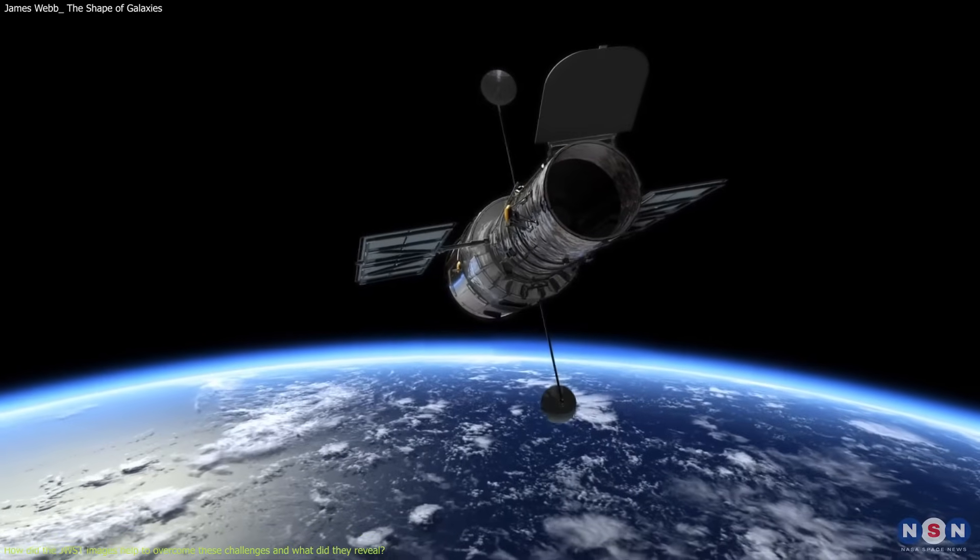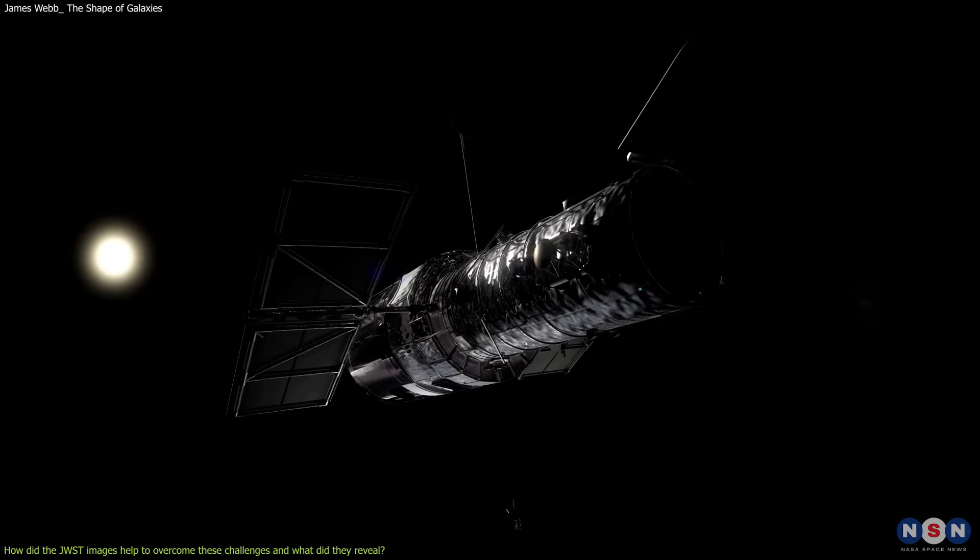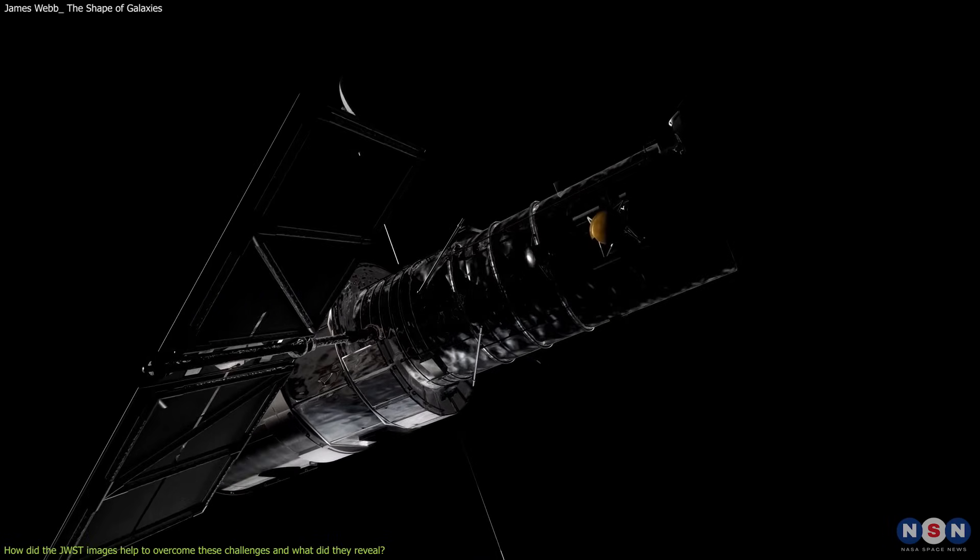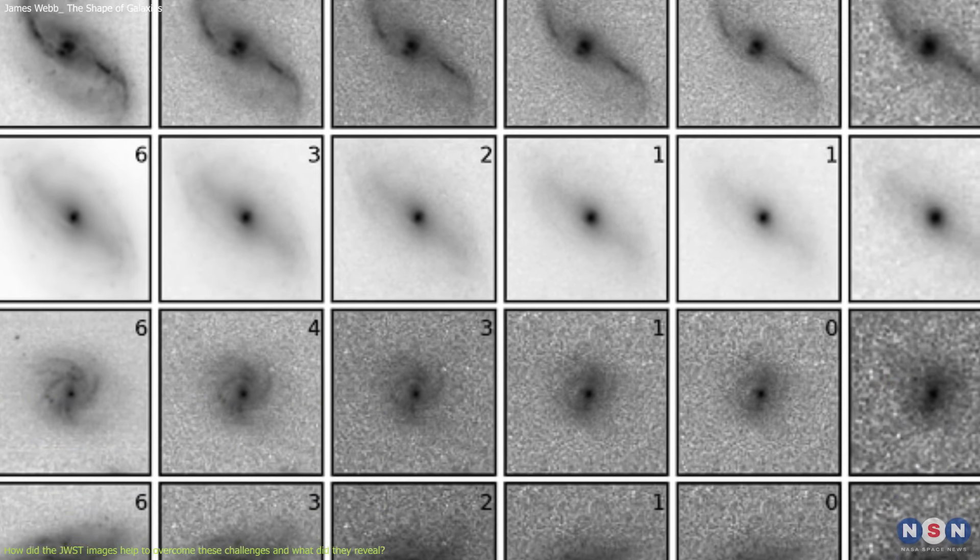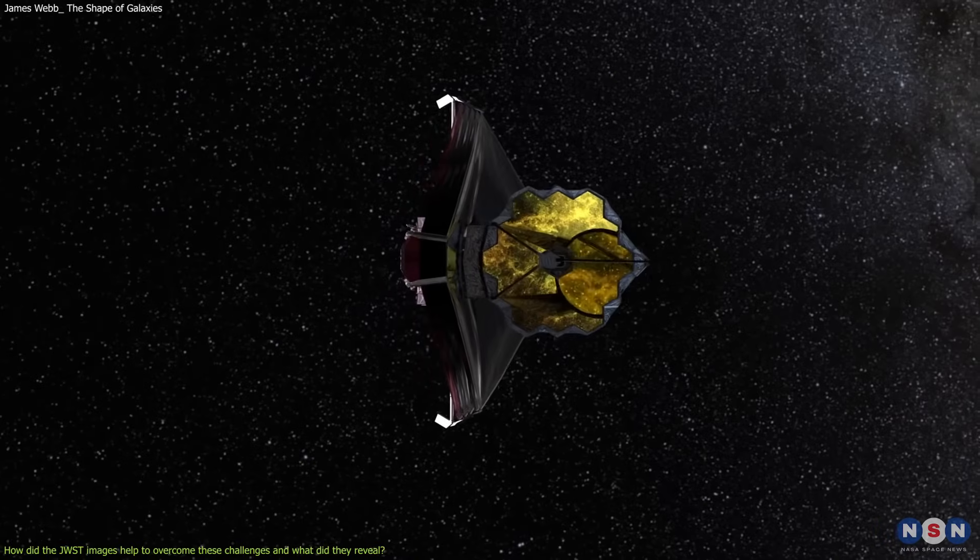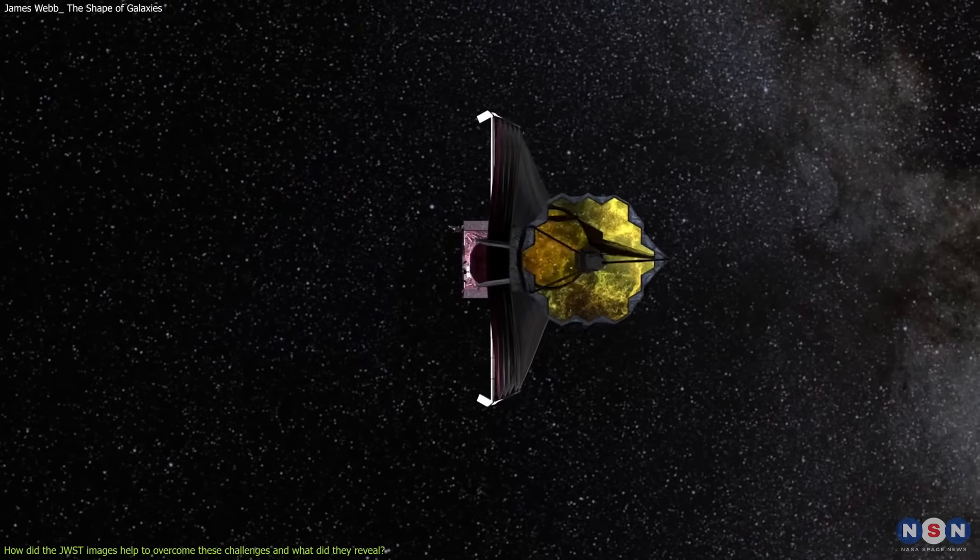These fractions are higher than the fractions observed with the Hubble Space Telescope, which were about 20%, 10%, 5%, and 2%, respectively. This means that the James Webb images revealed more spiral galaxies than the Hubble images, thanks to the Webb's superior sensitivity, resolution, and infrared range.